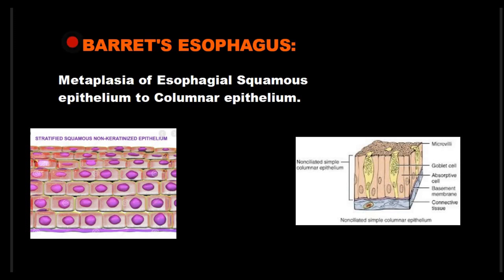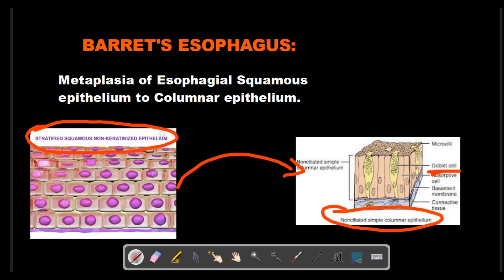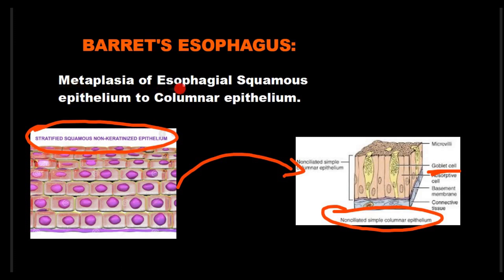Now we're going to be talking about Barrett's esophagus. Barrett's esophagus is a condition characterized by the change of the normal lining epithelium of the esophagus by a lining epithelium which is similar to the intestine. The normal lining epithelium of the esophagus is stratified squamous non-keratinized epithelium, and in Barrett's esophagus it changes into non-ciliated simple columnar epithelium with goblet cells. Hence, we define Barrett's esophagus as metaplasia of esophageal squamous epithelium to columnar epithelium.